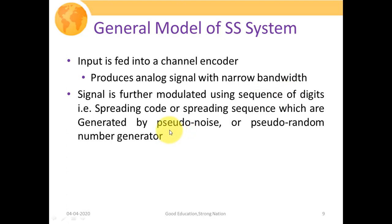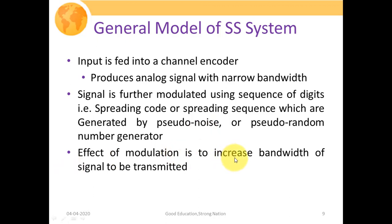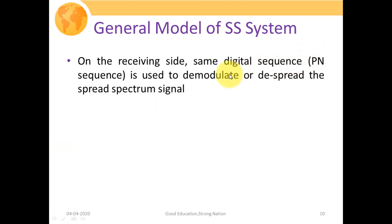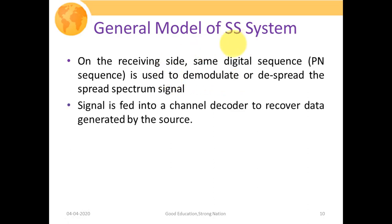The pseudo random noise sequence generator is one of the most important parts of the spread spectrum system. The pseudo random noise sequence is a random number sequence used to spread our signal and expand the baseband signal bandwidth. The effect of modulation is to increase the bandwidth of the signal to be transmitted. On the receiving side, the same PN sequence is used to demodulate or de-spread the spread spectrum signal, and then the channel decoder performs the reverse operation to recover the data.